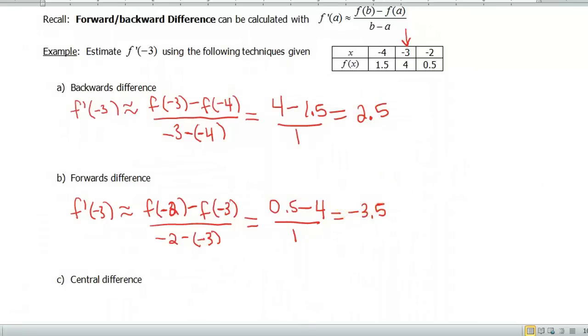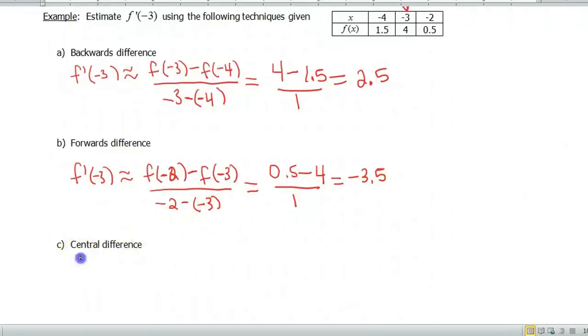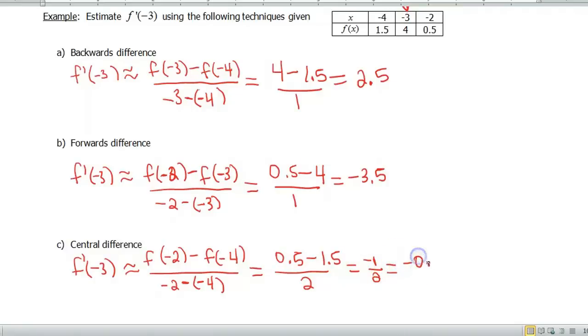Let's take a look at the central difference. Central difference means you're going to want to think of -3 as the center. f'(-3) is approximately... that means you're going to want to use the values on both sides, and this time we're not going to be using the value at -3. Let's see if that gives us a little bit better estimate. So f(-2) minus f(-4), because those are going to be the two values around the center of -3, so -2 minus -4. When I plug those in, that's going to be 0.5 minus 1.5 all over 2. That gives us -1 over 2, or -0.5.